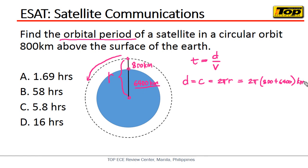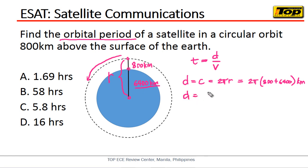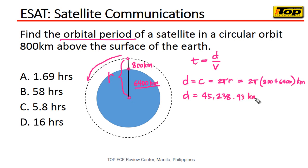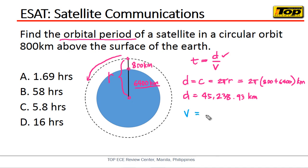So the calculation is 800 plus 6,400, with units in kilometers. The distance comes out to approximately 45,238.93 kilometers. Now let's solve for the velocity of the satellite orbiting the Earth.